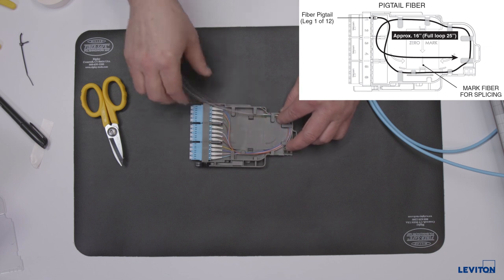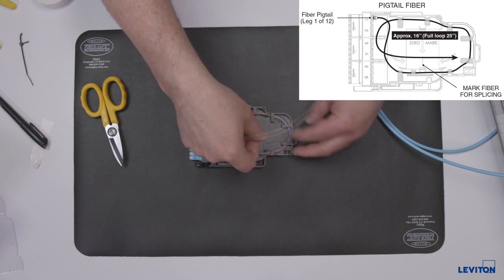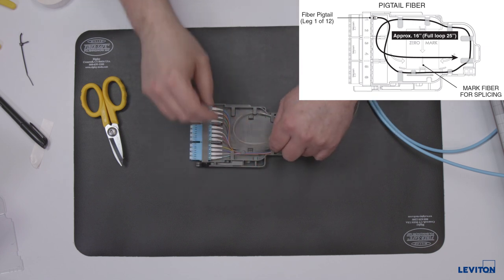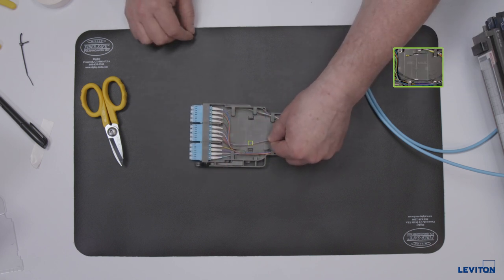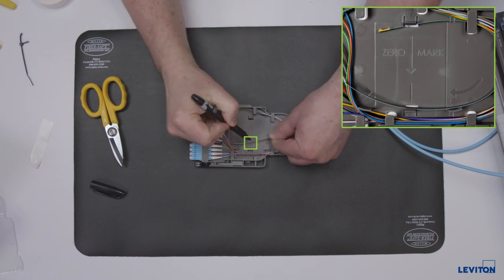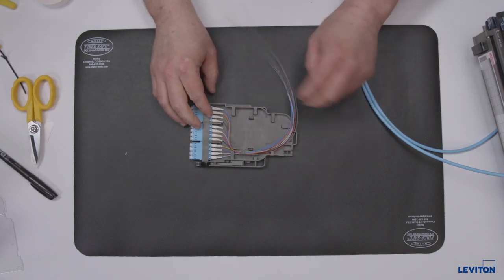Route the pigtail counterclockwise through the management tabs until all the slack is stored, one full loop, and the fibers are entering the splice sleeve holder area. Mark the fibers at the zero mark guide and remove all fibers from the storage area.